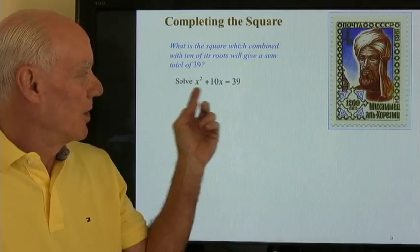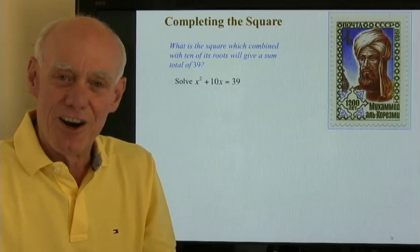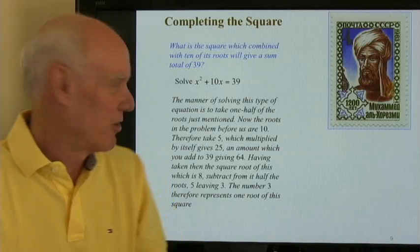So what square, when combined with 10 of its roots, gives a sum total of 39? Alright, so here's the solution out of al-Kharizmi's book.